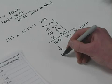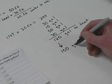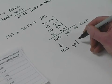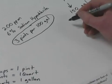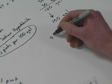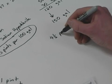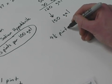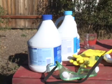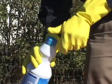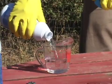We will round our gallons to be treated up to the nearest 50 gallons, which gives us 150 gallons. At 3 pints per 100 gallons for 150 gallons, we need to add 4.5 pints of liquid laundry bleach. There are 2 cups in a pint and 2 pints in a quart. You can use a standard household measuring cup to measure off the amount you calculate.